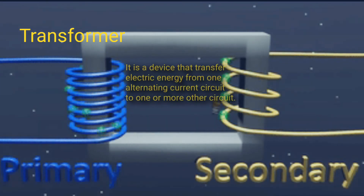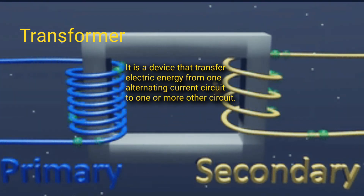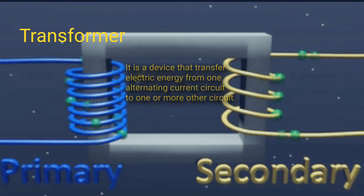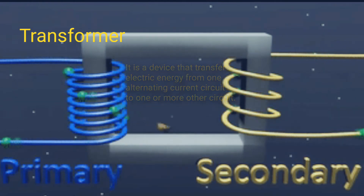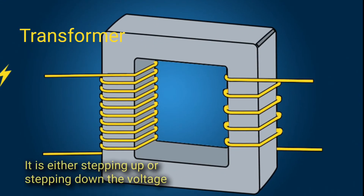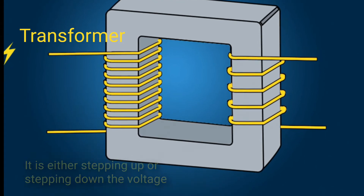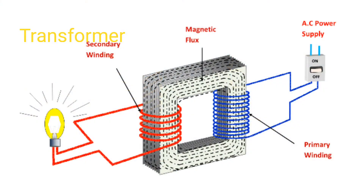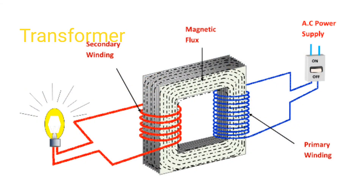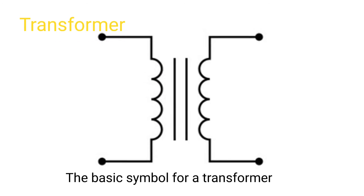Transformer: it is a device that transfers electric energy from one alternating current circuit to one or more other circuits, either stepping up or stepping down the voltage. The transformer symbol is denoted by two coils placed side by side and separated by parallel lines.